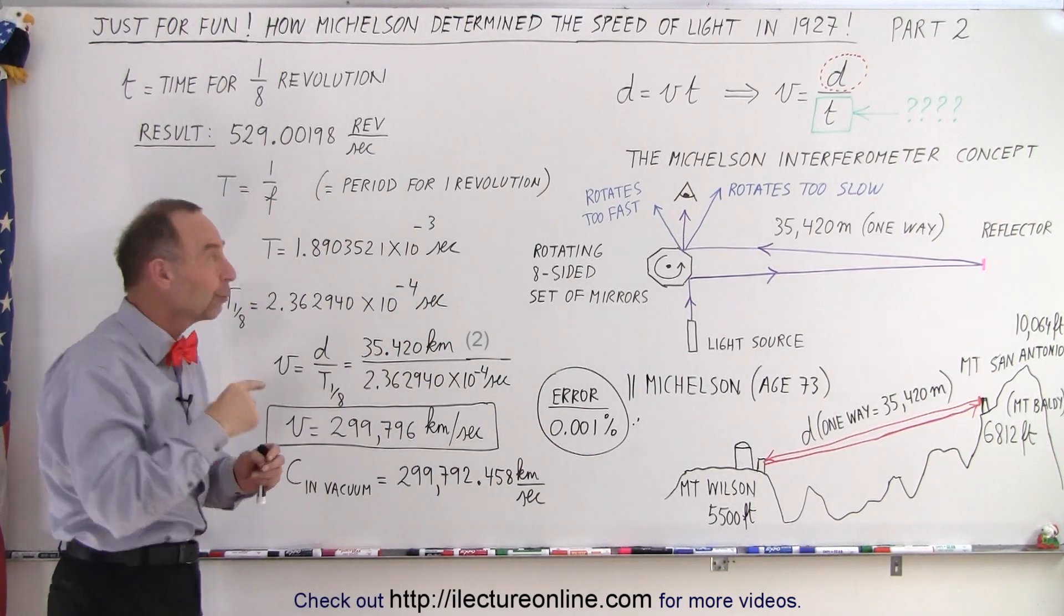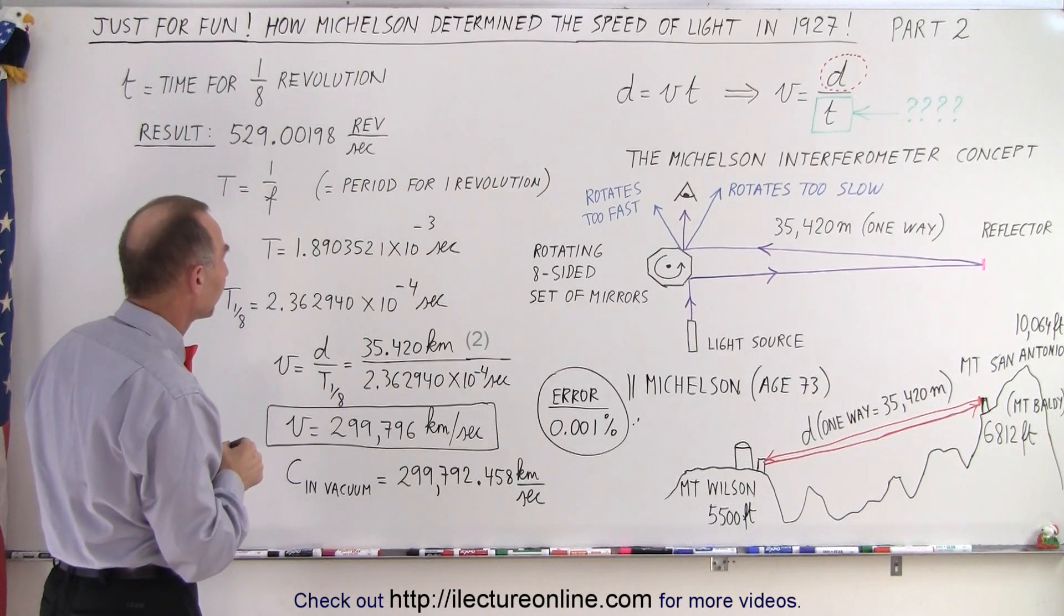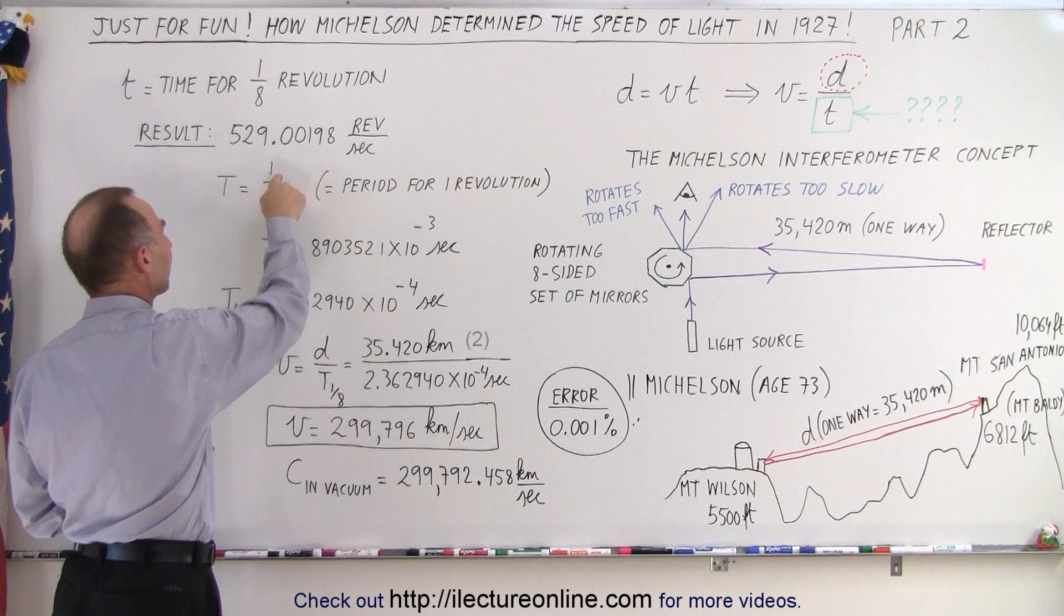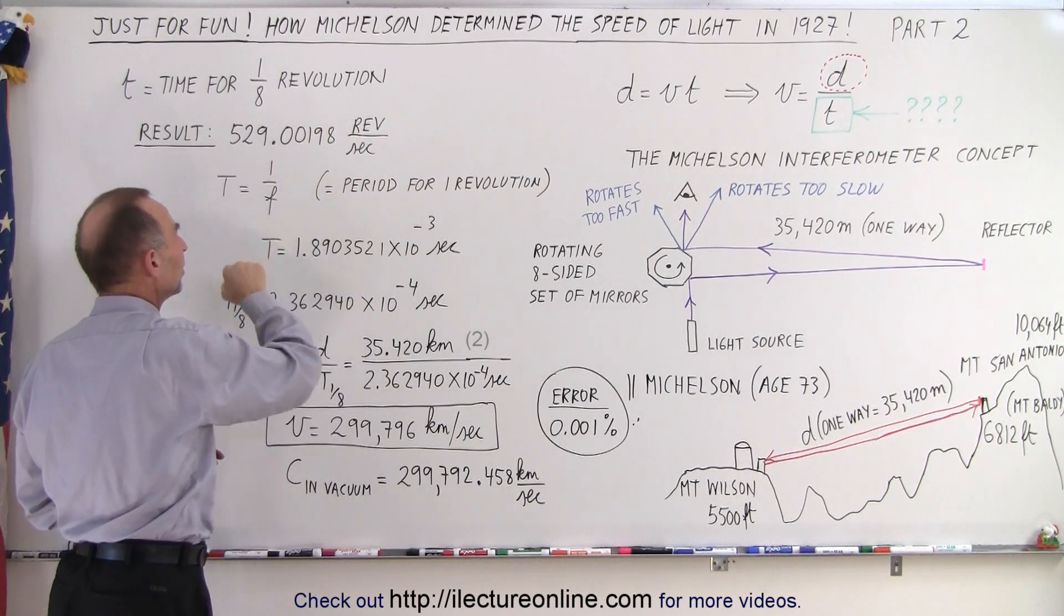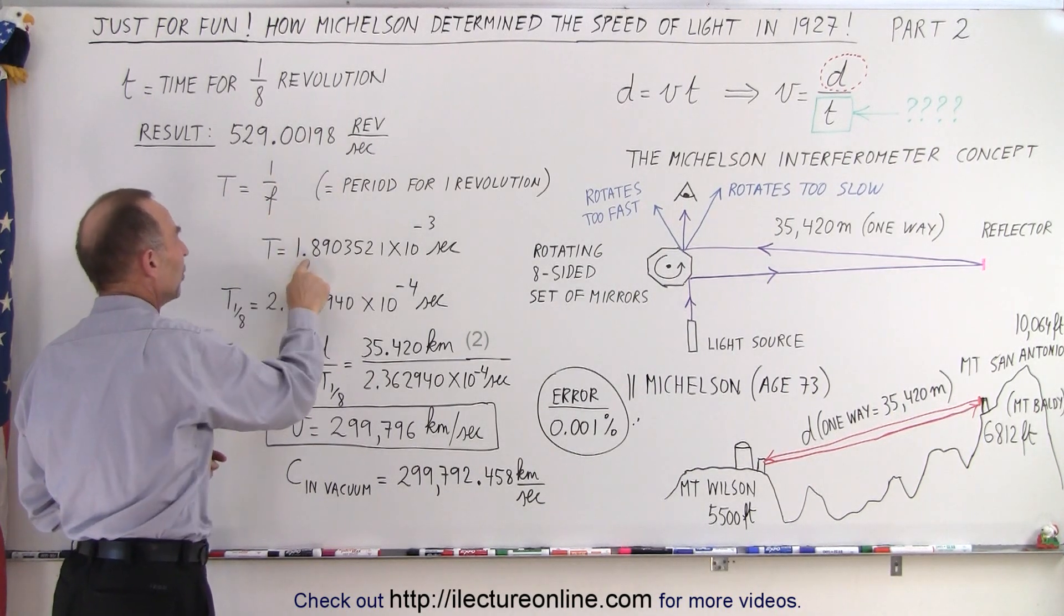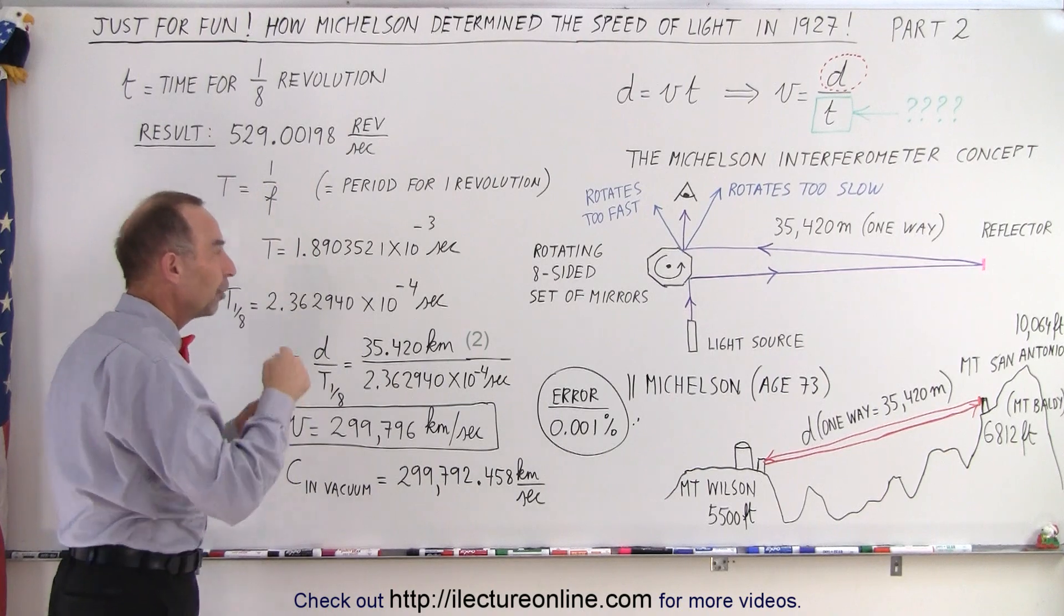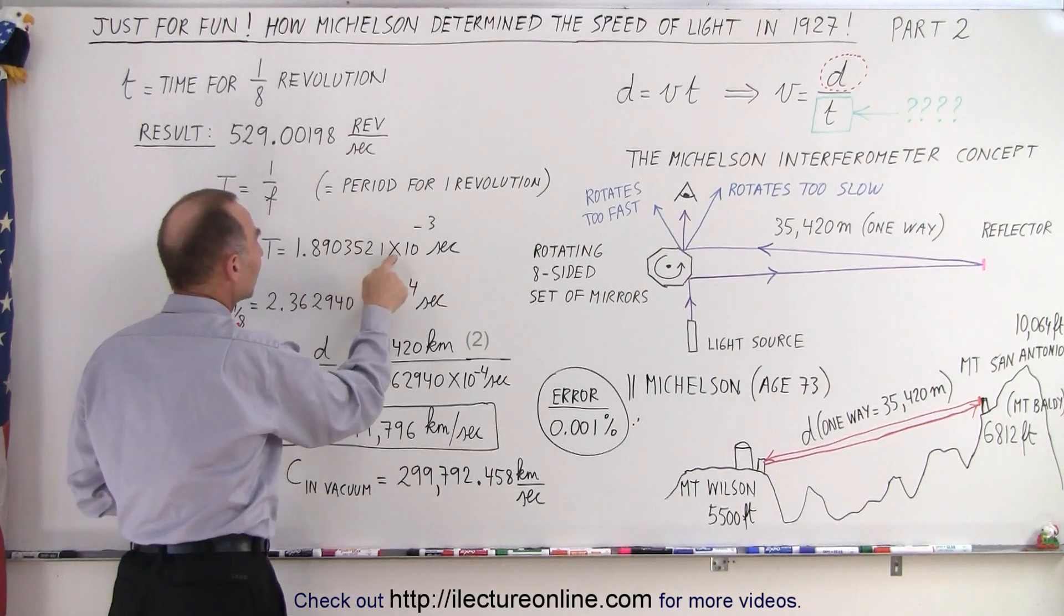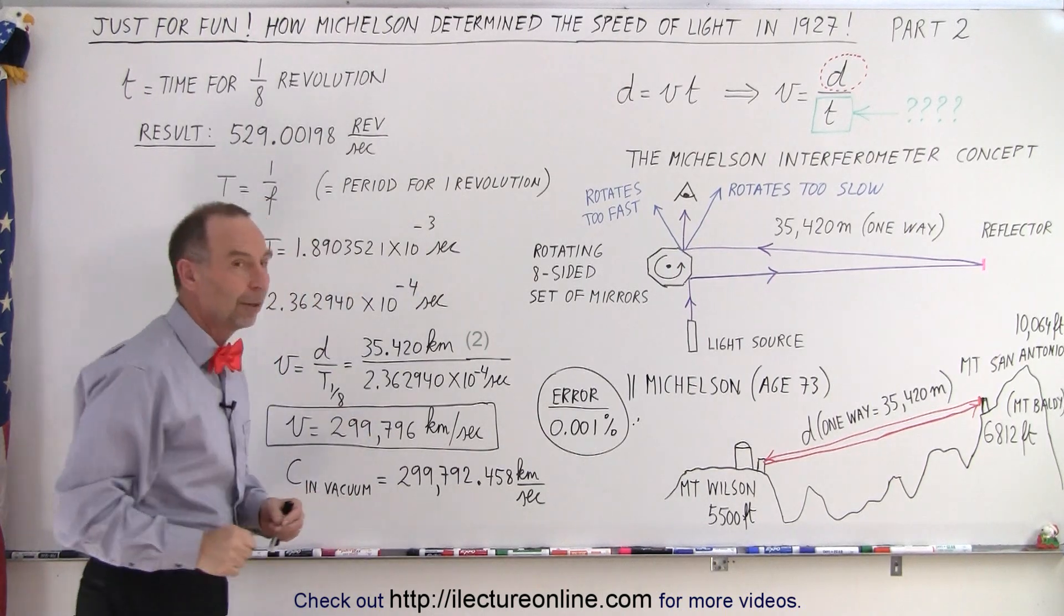So then you want to have the period, and the period is the inverse of the frequency, the number of revolutions per second. If you take the inverse of this number, you end up with this number right here. The period for one complete revolution was 1.89 times 10 to the minus three seconds.